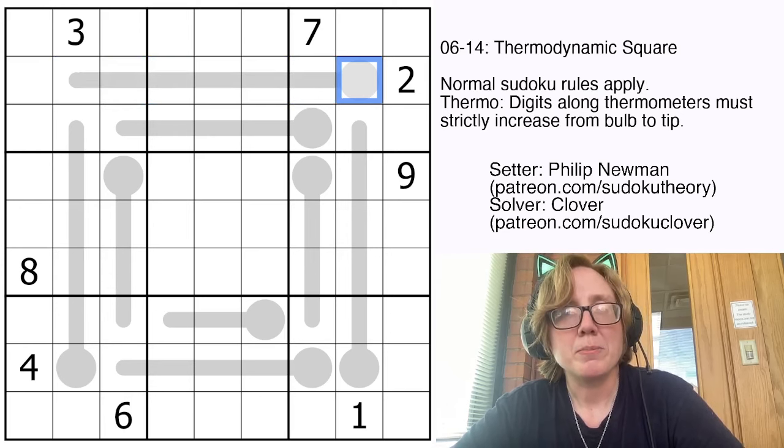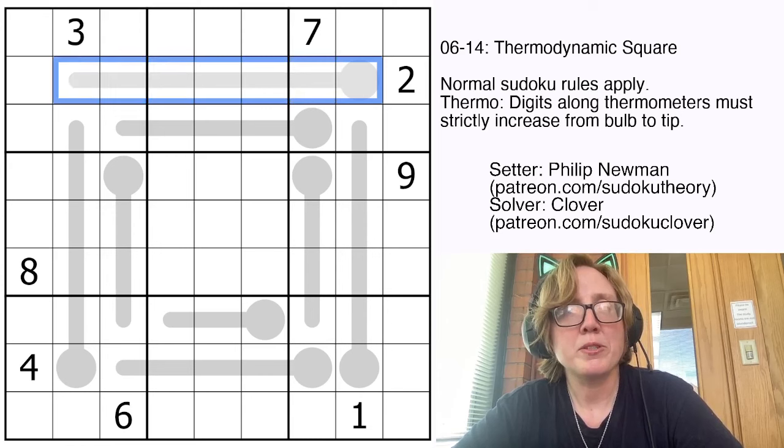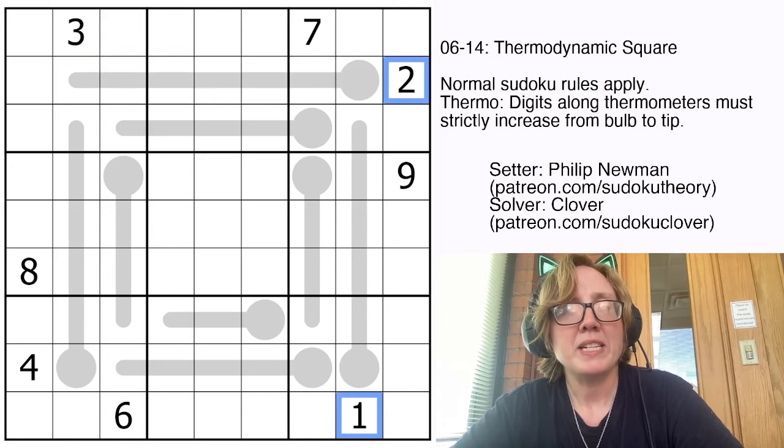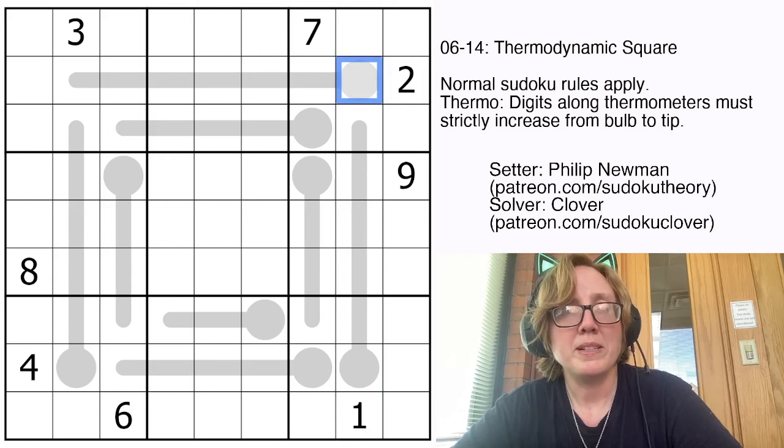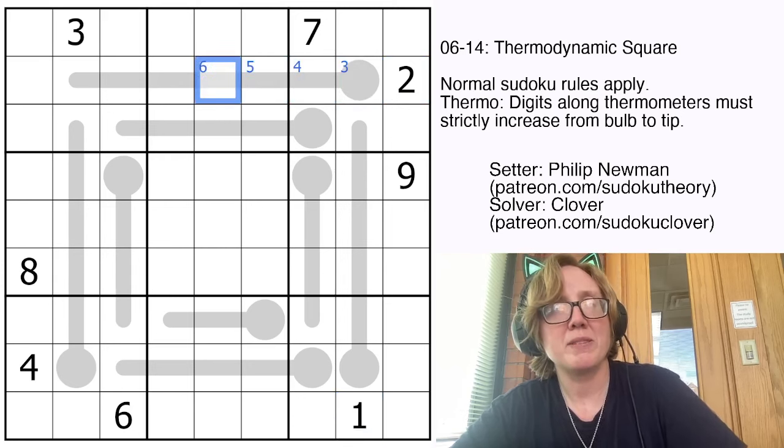The first thing I notice in this particular puzzle is that this thermometer is quite long, but it already has two of the smallest digits excluded from the bulb. So the smallest digit has to be at least a 3, and I want to check what happens if we make it a 3.